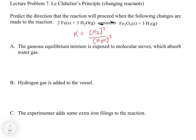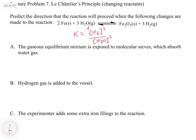Looking at some changes: if the gaseous equilibrium mixture is exposed to a molecular sieve that absorbs water gas, we're decreasing the concentration of water, so we're going to favor the reverse direction. If hydrogen gas is added to the vessel, that pumps up the right-hand side, again pushing the reaction to the reverse. If an experimenter adds extra iron filings, increasing the iron won't affect the equilibrium mixture because the equilibrium only depends on hydrogen and water — this is going to have no effect because iron is a solid.